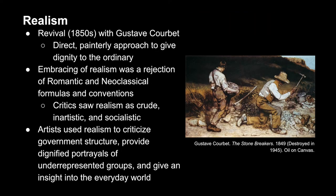In the 1850s, we see a revival of realism with Gustave Courbet, who sought to give dignity to the ordinary through very direct yet painterly approaches. As we can see in this example, the image is beautiful, has great technique, and is very expressive — but these are just ordinary working-class people, as reflected in the title The Stonebreakers. For artists, embracing realism was a total rejection of the romantic and neoclassical formulas and conventions. As a result, critics saw realism as crude, inartistic, and socialistic. But Courbet responded to critics saying, 'Show me an angel and I'll paint one.' Artists wanted to depict the life around them, not a mythology or something from the past.